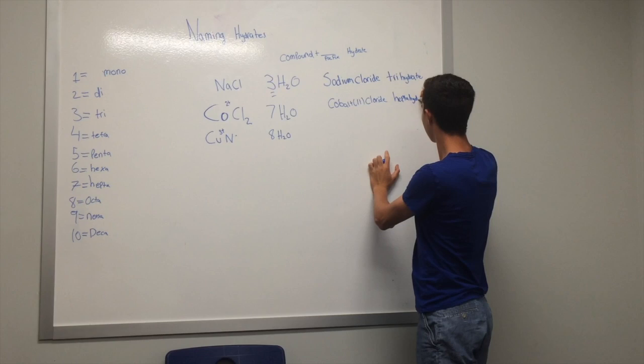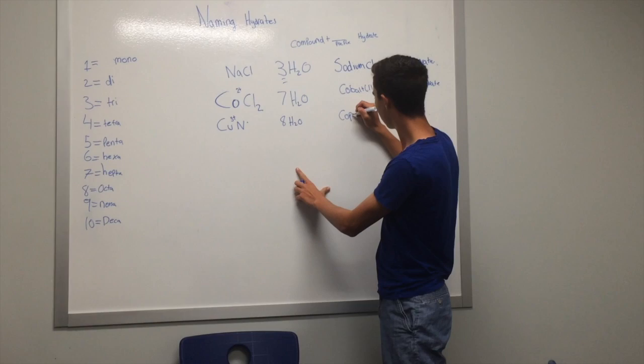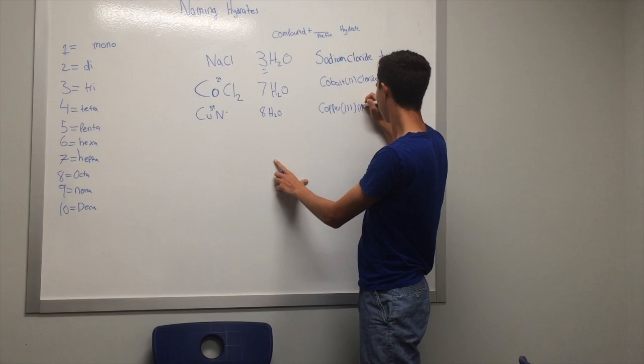Let's do one final example. Here, we have copper, which has a positive 3 charge, nitrite. So it would be copper 3 nitrite.